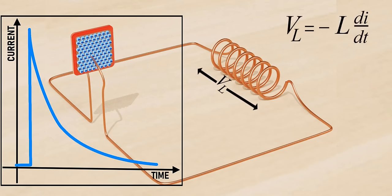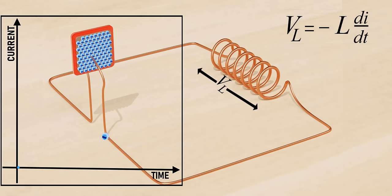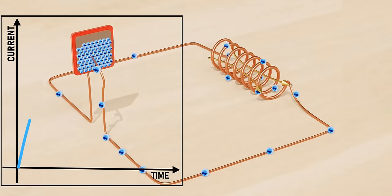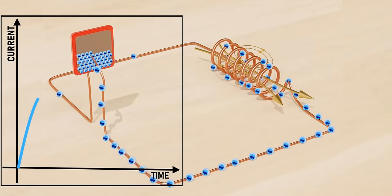An inductor develops EMF across it based on the change in current flow. This means that a drastic change in current is not possible across the inductor, as in the previous case. Now the current flow starts from zero, increases to the maximum, and then comes back to zero again.